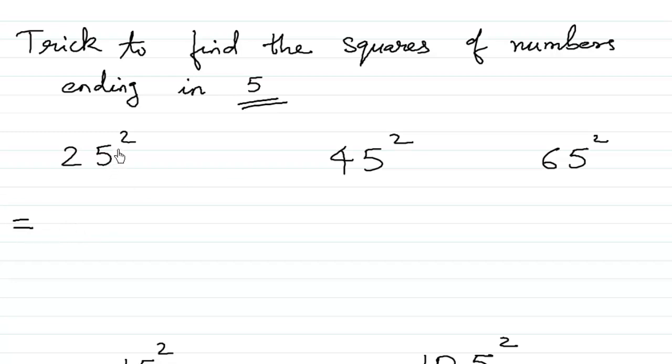First, we will write the square of 5, 5 times 5 is 25. So all these numbers will end in 25. That's part of the trick. So even in the square of 45, the last two digits will be 25. Even in the square of 65, the last two digits will be 25.